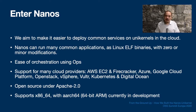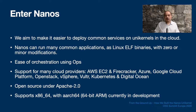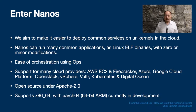Cloud platforms currently supported by Ops are AWS EC2 and Firecracker, Azure, Google Cloud Platform, OpenStack, vSphere, and Vultr. Nanos images may also be deployed on Kubernetes and DigitalOcean. Nanos is open source software released under the Apache 2.0 license. We currently only support 64-bit x86 binaries, but 64-bit ARM support will be arriving soon. Ops and the Nanos build environment work under Linux and macOS, with Windows support for Ops currently in the works.